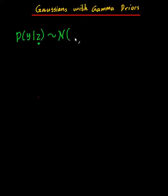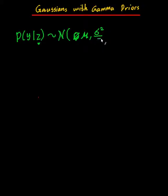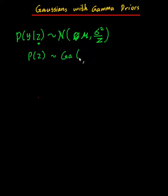It doesn't really matter, but I'm going to say it's going to have mean mu, just so that it's slightly more interesting. The important part is the variance is going to be sigma squared on z. So that is my distribution on y. Now, I have a prior on z that is a gamma distribution with parameters alpha and beta.